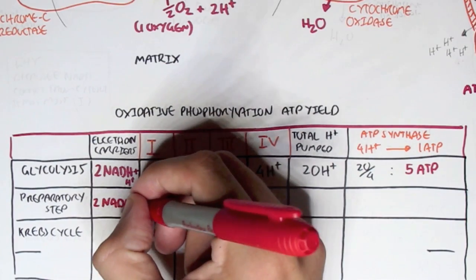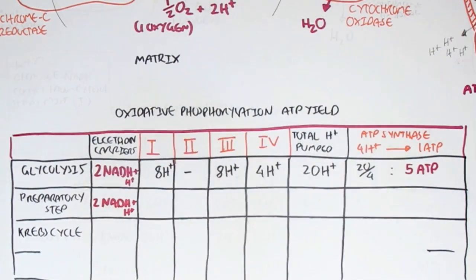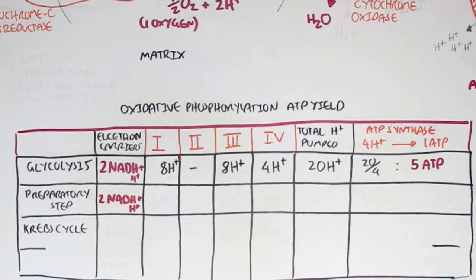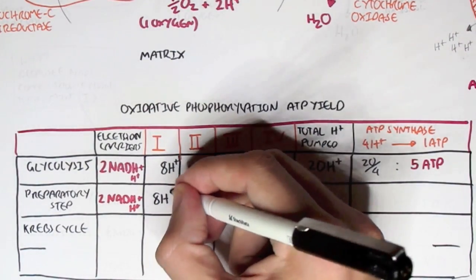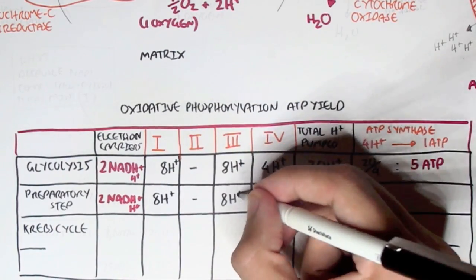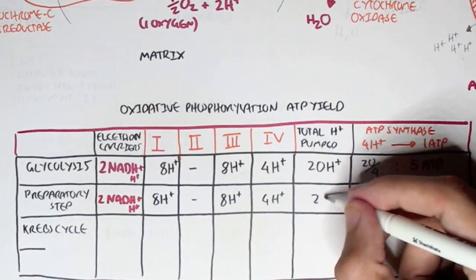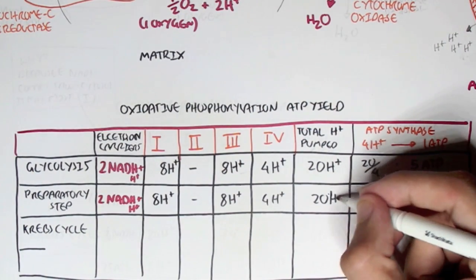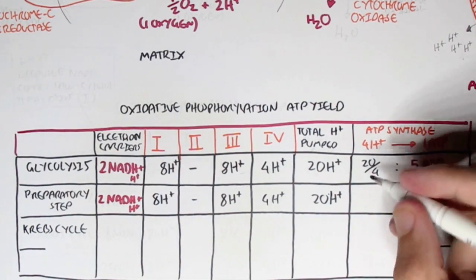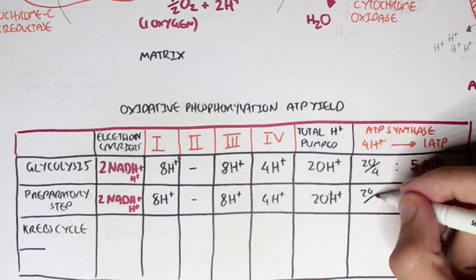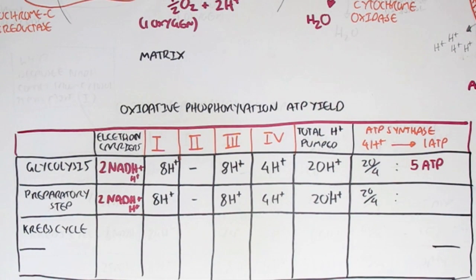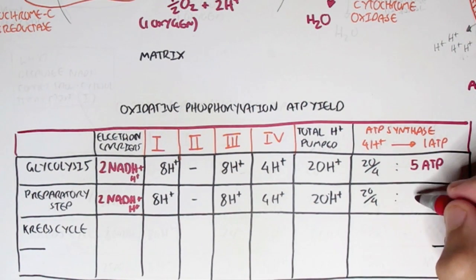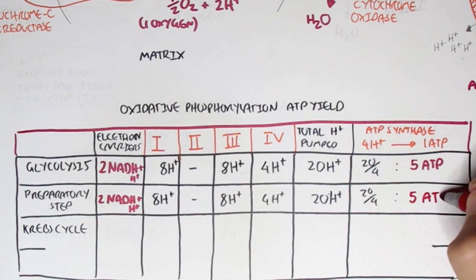Similarly with the preparatory step, which gave us two NADHs, this means it's exactly the same. Complex I will pump out eight hydrogen ions into the intermembrane space. Complex III, eight hydrogen ions. Complex IV, four hydrogen ions, giving a total again of 20 hydrogen ions. So the total amount of ATP produced from 20 hydrogen ions is five ATP, because 20 divided by four is five.